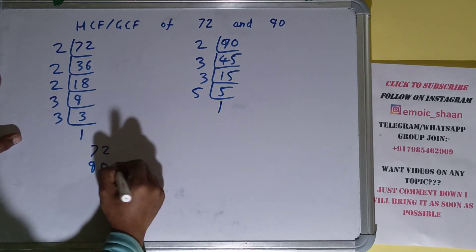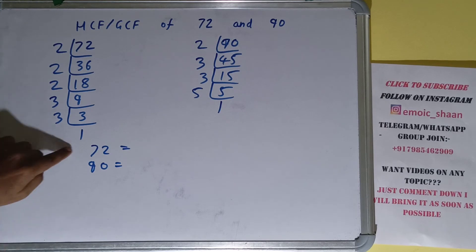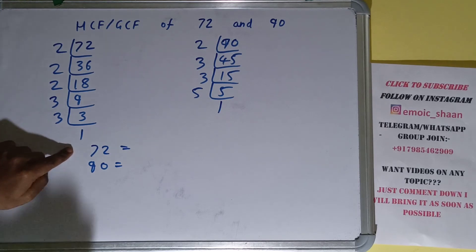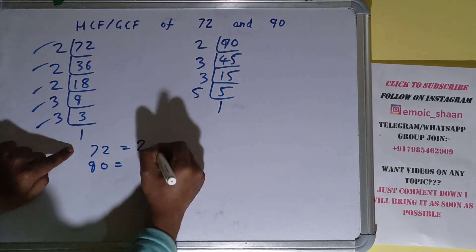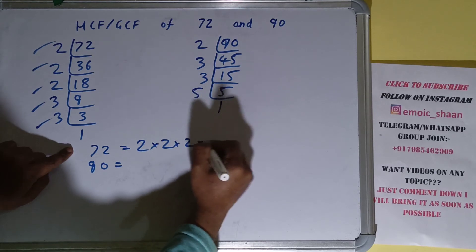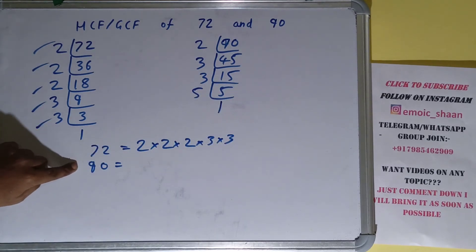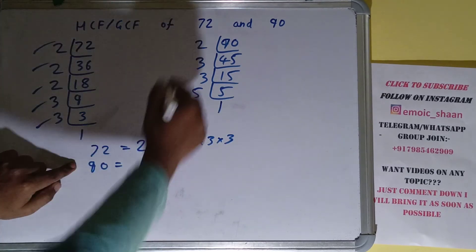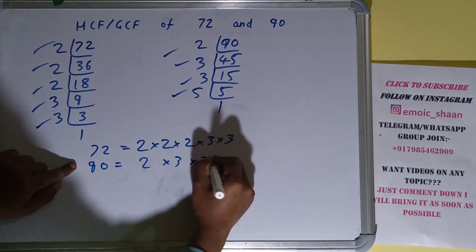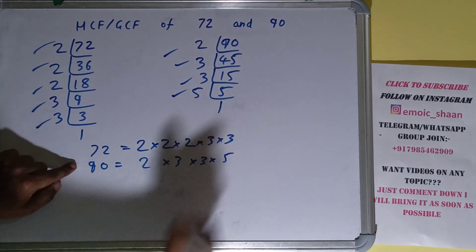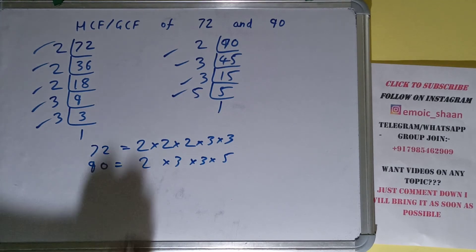The next thing we need to do is write down each of the numbers with their respective prime factors. For 72, the prime factors are 2 × 2 × 2 × 3 × 3. For 90, the prime factors are 2 × 3 × 3 × 5. The next thing we need to do is circle out the common prime factors.